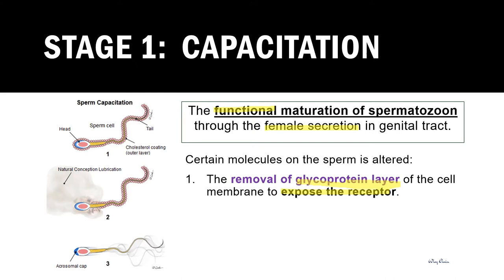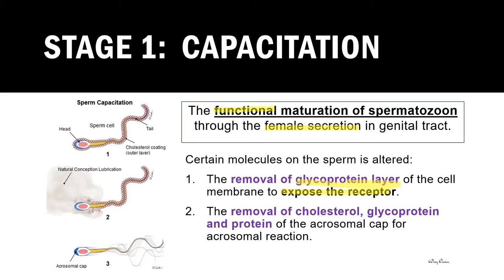Second, there is the removal of cholesterol, glycoprotein, and proteins of the acrosomal cap for the acrosomal reaction. This diagram shows a brief summary of events that happen to the capacitated sperm through the removal of the cholesterol coating and the removal of cholesterol, glycoprotein, and proteins at the acrosomal head — getting ready for the second stage of fertilization.